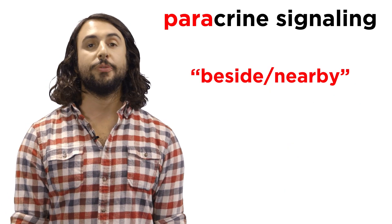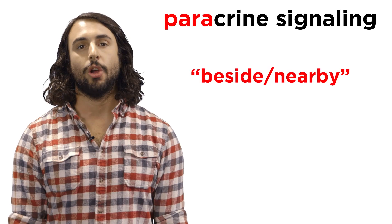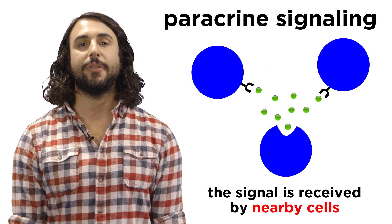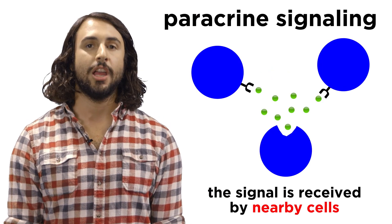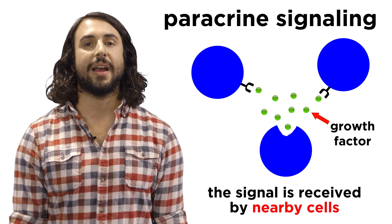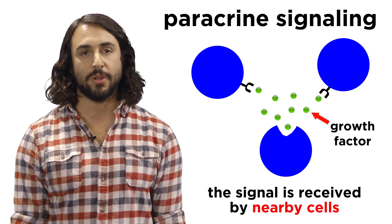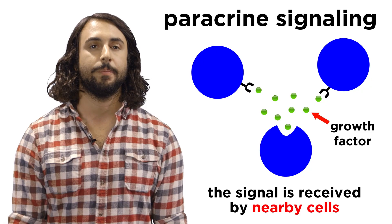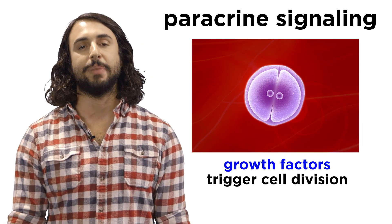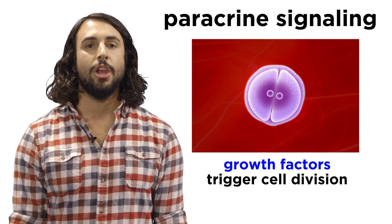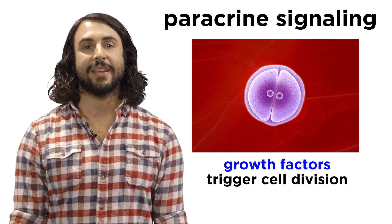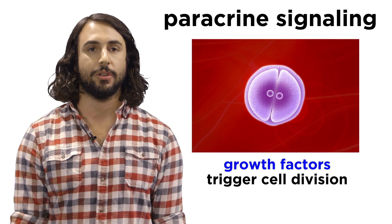The prefix para means beside or nearby, so paracrine signaling is a type of local signaling where a compound like a growth factor is secreted by a cell, which then interacts with nearby cells. Growth factors are signals that tell a cell to begin dividing, which is what allows us to become so much taller during intense periods of growth in childhood.